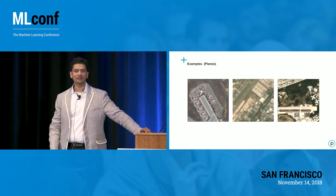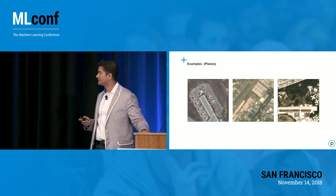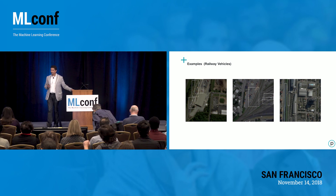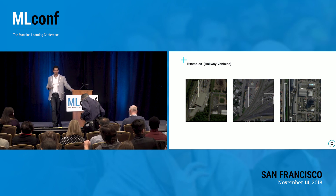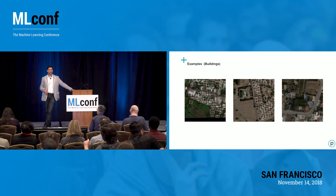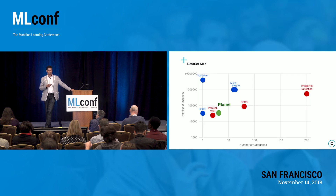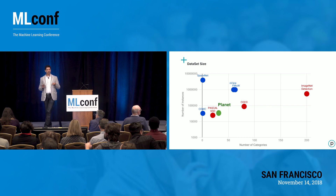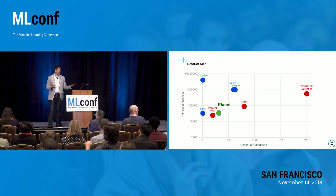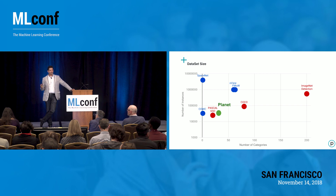Here are a few examples: planes in SkySat and PlanetScope imagery, railway vehicles in different regions, and examples of buildings and their annotations in urban as well as residential regions. This gives you a sense of the scale and scope of coverage you can have in disaster regions for object detection. Through that effort, what we got to is a data collection in the range of 25 different classes having close to 50,000 annotated samples, which puts us in the realm of open source challenge-worthy datasets — and this was a relatively quick effort.